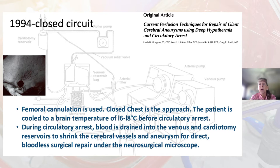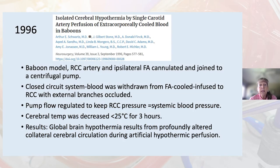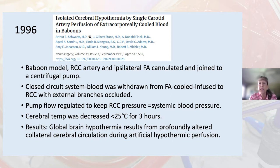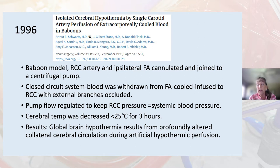In 1996, Dr. Schwartz wrote another paper using a baboon model with the right common carotid artery and the ipsilateral femoral artery cannulated and joined to a centrifugal pump. Blood was withdrawn from the femoral artery, cooled, and re-infused into the right common carotid with the external branches occluded. The pump flow was regulated to keep the right common carotid pressure equal to the systemic blood pressure, and cerebral temperature was decreased to less than 25 degrees for three hours. The results showed that global brain hypothermia resulted from profound altered collateral cerebral circulation during artificial hypothermic perfusion.